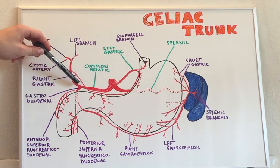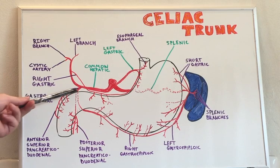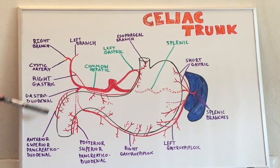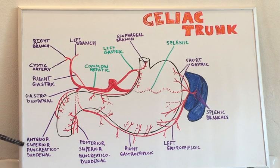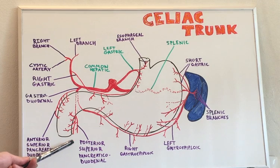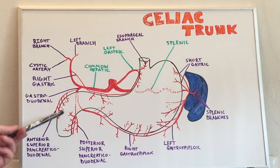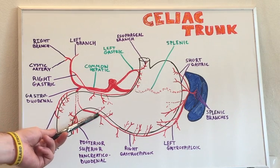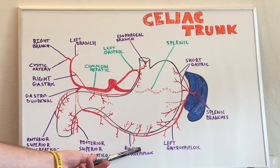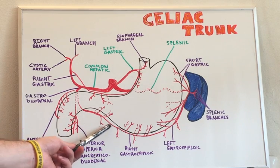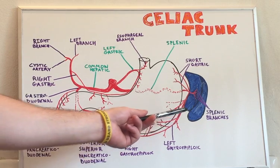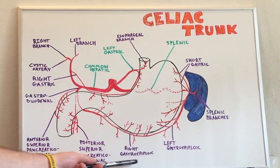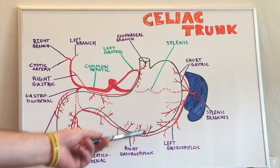Another branch from the common hepatic is the gastroduodenal branch, which has three branches of its own: the anterior superior pancreaticoduodenal branch, the posterior superior pancreaticoduodenal branch, as well as the right gastroepiploic branch, which completes the vasculature on the greater curvature of the stomach and anastomoses with the left gastroepiploic branch from the splenic artery.